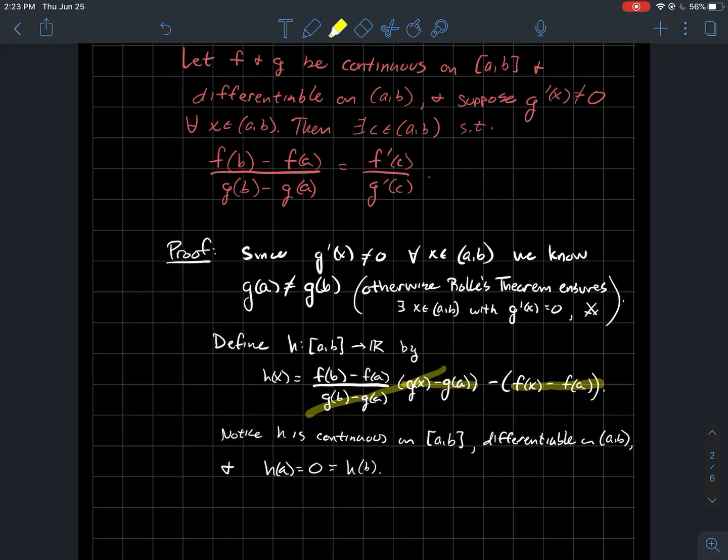So then, in fact, you get h of b is zero. So what have I got? I've got a nice continuous function on a, b, that's differentiable on the open interval a, b, that is zero at its endpoints. It satisfies Rolle's theorem.